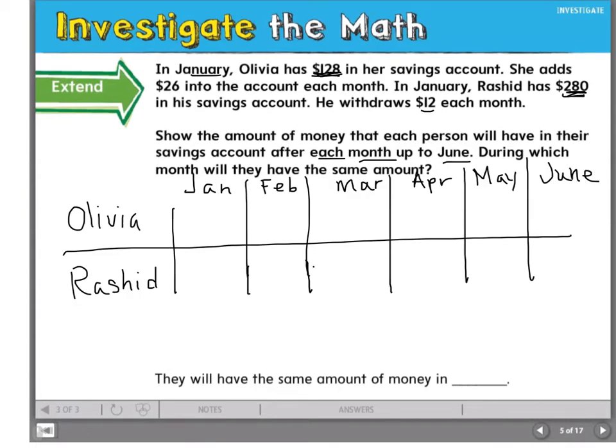Now I have a system to organize my work so I can really figure things out. I know that in January, Olivia had $128, and each month she adds $26 to her account. So that means in February she would have $154. In March, she would have $180.